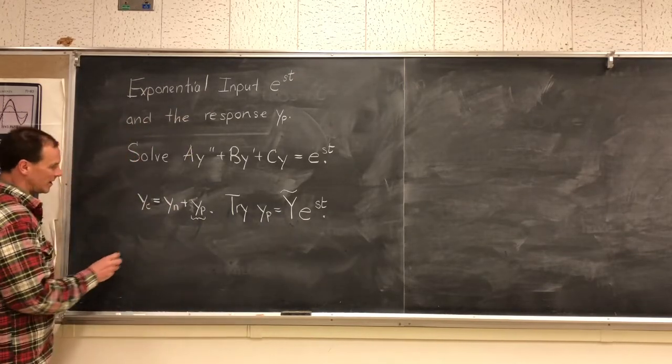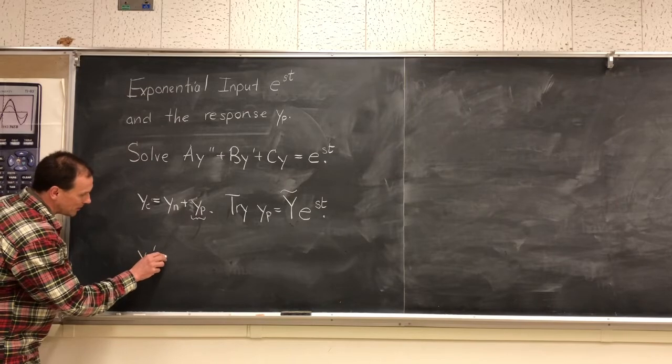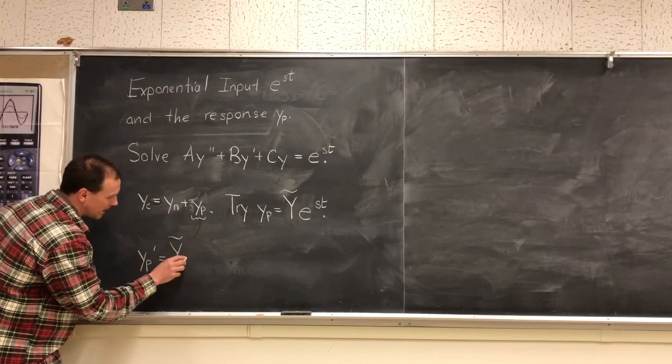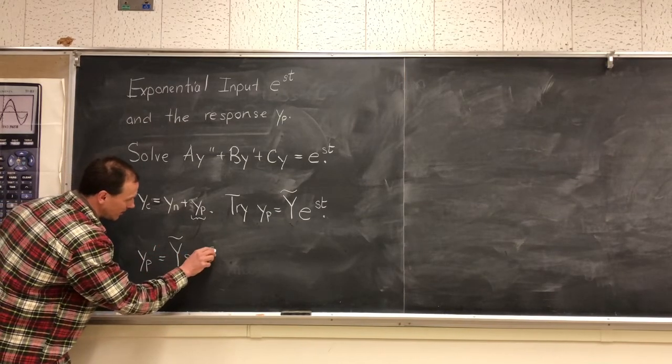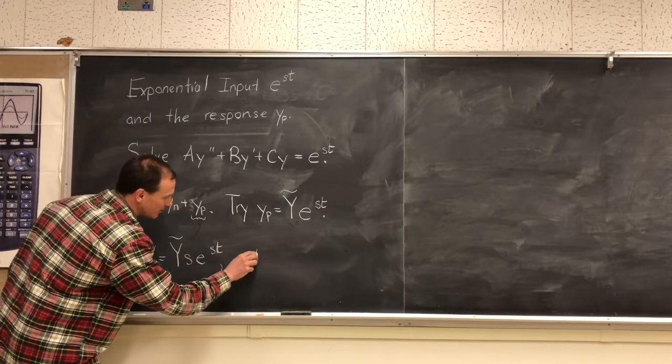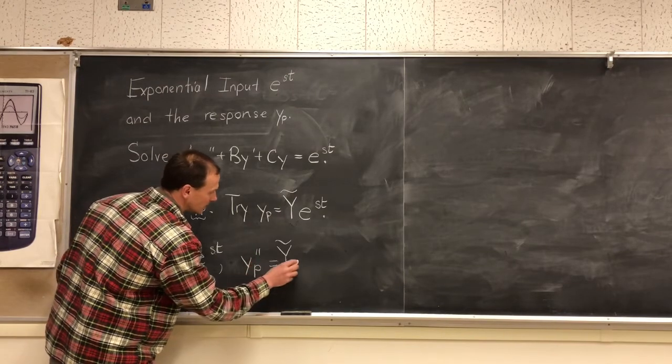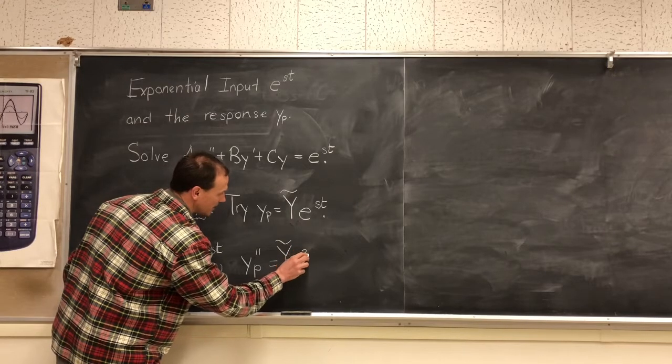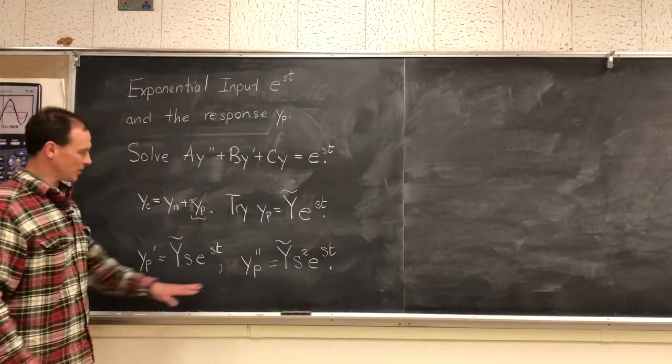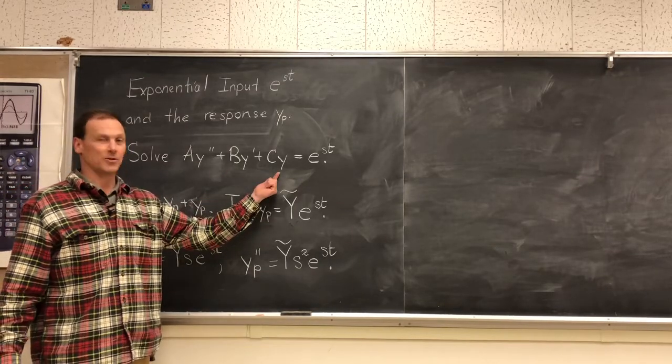What we need then is y particular prime, so taking the derivative of what we're going to try, that's Y tilde times s times e to the st. Then we're going to take the second derivative for y particular, which is going to be capital Y tilde times s squared times e to the st. We're going to substitute y particular double prime, y particular prime, y particular back into our original equation and solve.